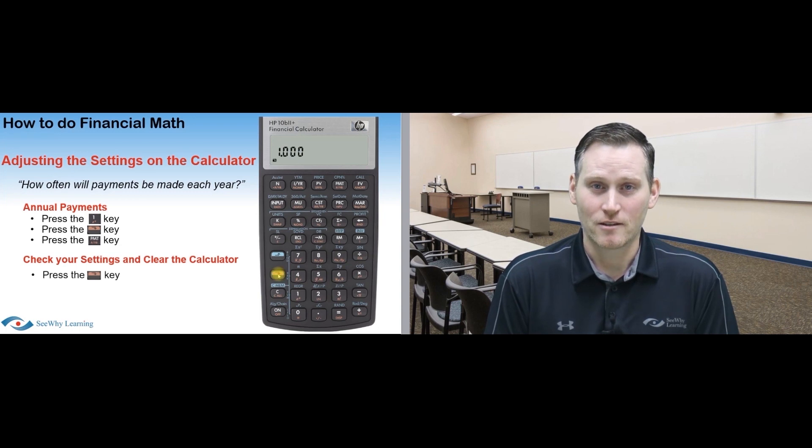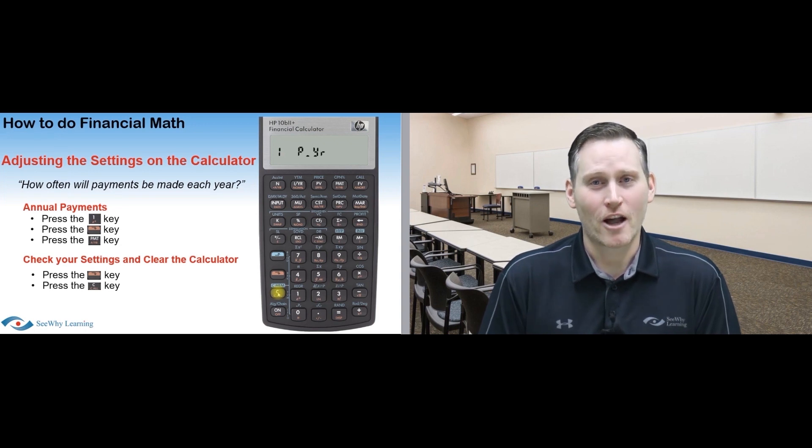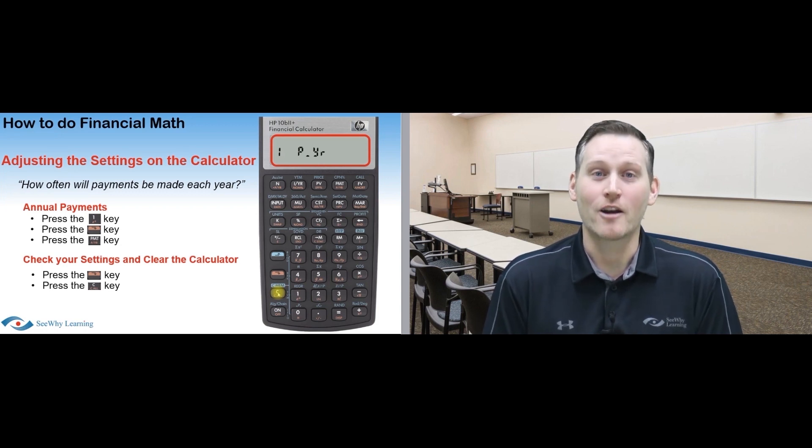So, let's confirm it's set to 1 payment per year. Press the downshift key, then press the C all key, which stands for clear all and clears any numbers that have been inputted before, and your calculator should say 1P underscore YR, or 1 payment per year. If it does, perfect. If not, rewind the video and watch this part again.